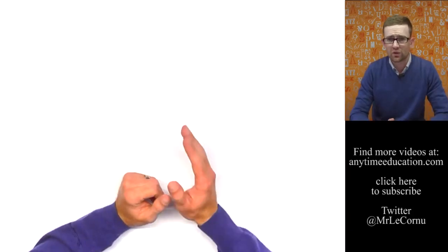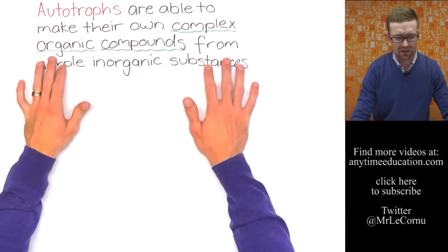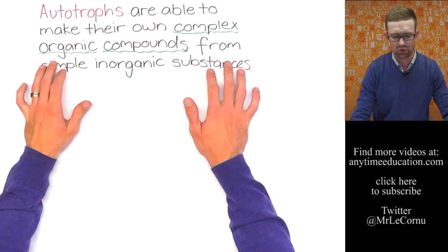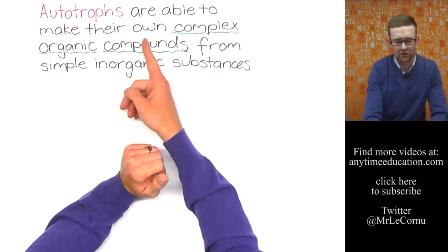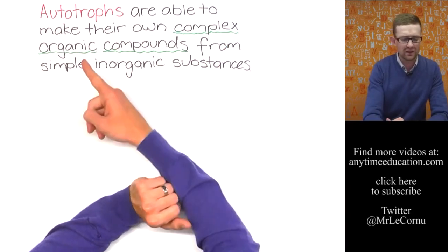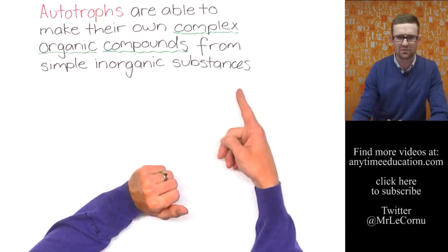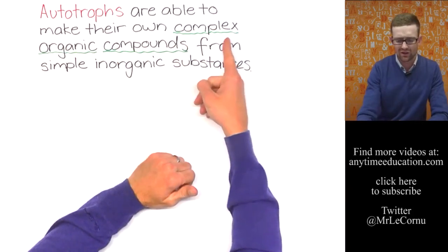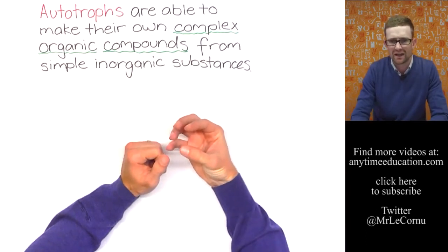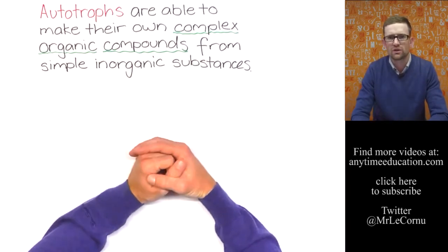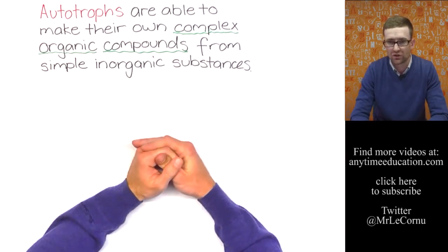So first of all let's look at autotrophs. Autotrophs were the grass in the food chain that we were just looking at, also called producers. Here's a definition for you. Autotrophs are able to make their own complex organic compounds from simple inorganic substances. I've underlined complex organic compounds in green because complex organic compounds are the food for living things. Most commonly we're thinking of things like glucose.